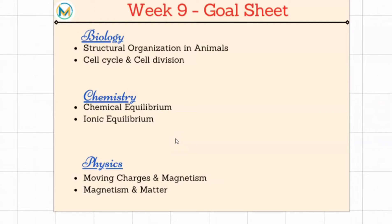Hello guys, good evening. Welcome to Week 9 goal sheet. Here we have six chapters to do. We have two chapters in bio: structural organization in animals, which includes the basics of cell organelles, then you have the types of animal tissue.